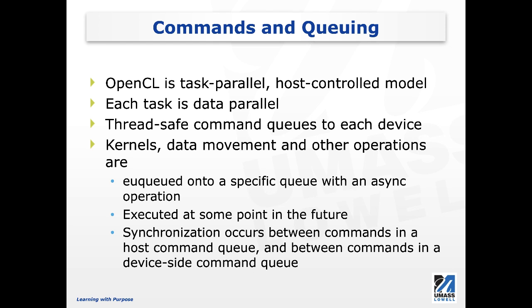Each device has a command queue, and these command queues are thread safe. Thread safety is an important concept, especially when you have multiple software threads running on the host, which may or may not operate on the same command queue. Kernels, data movement, and other operations are the important parts of OpenCL. These operations are enqueued onto a specific queue asynchronously. The queue itself could be in-order or out-of-order, and these operations are put into the queues and executed at some point in the future.